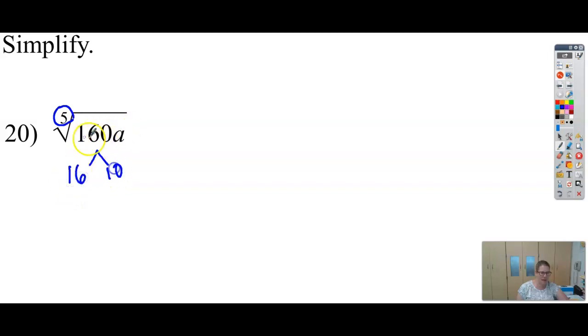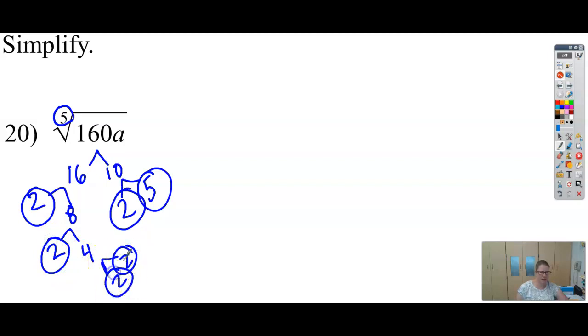I'm thinking 16 times 10. But again, any 2 numbers that multiply to 160 will work. 10 is 2 times 5, and those are both prime. 16 is 2 times 8. 8 is 2 and 4. And then 4 is 2 and 2. So again, a bunch of 2s.